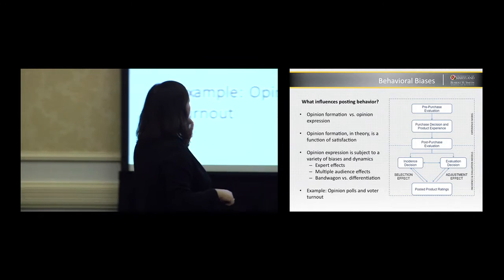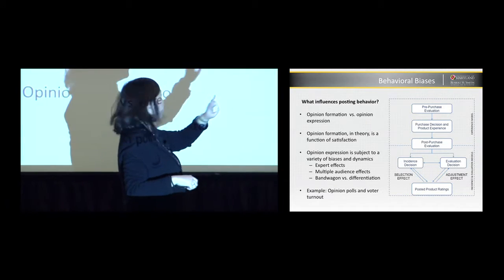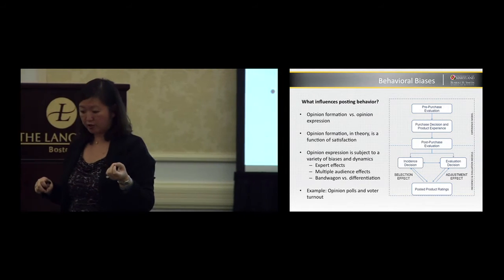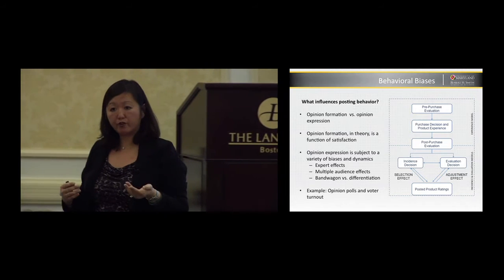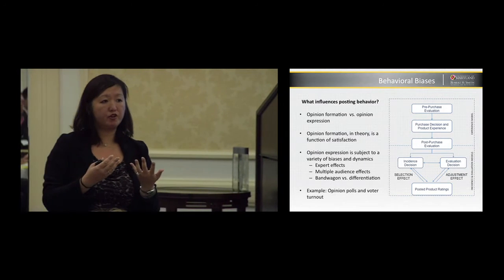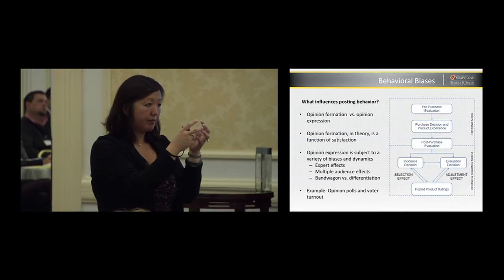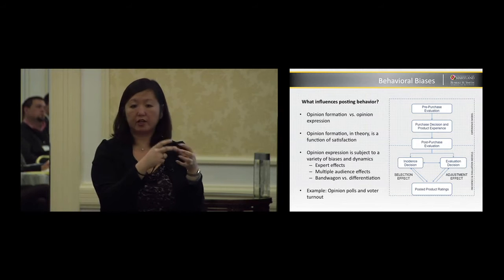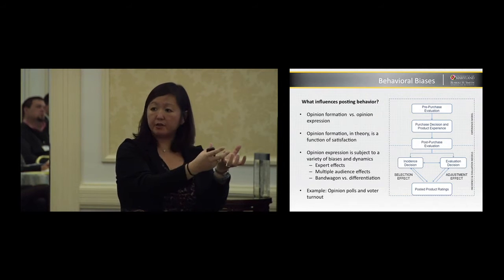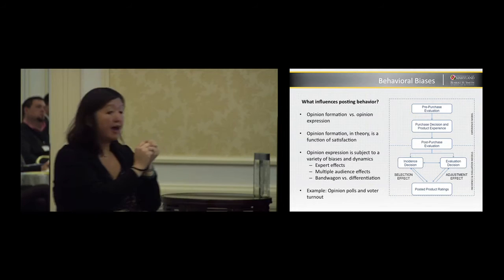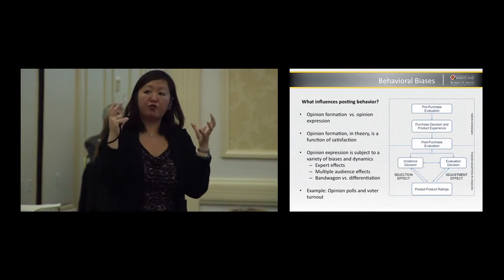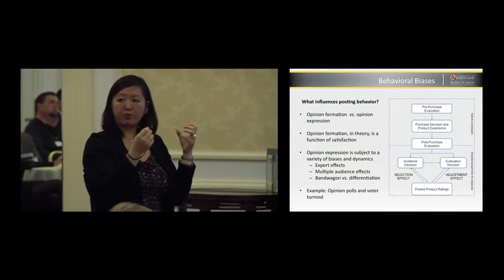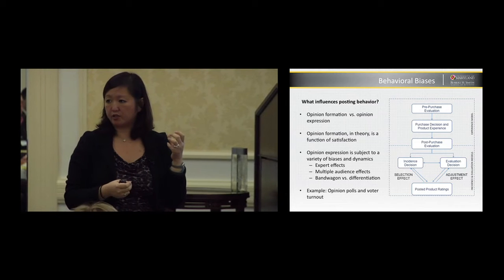And what we've identified are two factors. One is the selection effect and one is the adjustment effect. So there are some factors that cause some people to stay out of the conversation or to be more active in the conversation so that the population, the composition of the population participating online is constantly changing. It's constantly shifting. It's not always going to represent the same sentiment and the same opinions. At the same time, even if we have a representative sample participating online, what they express can still be biased by some of the social factors online.